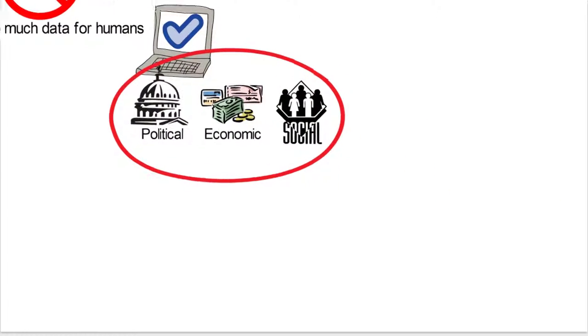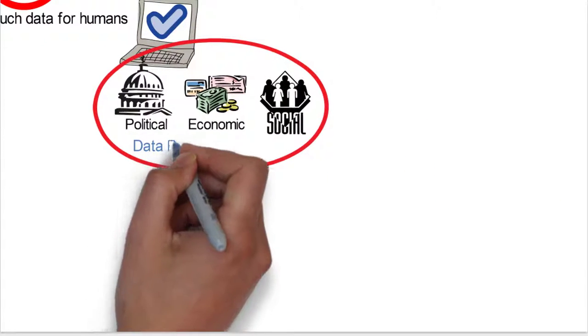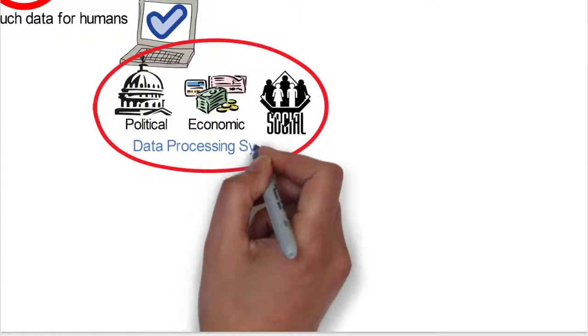So that also means that all of our institutions—our political, economic, and social institutions—are really becoming data processing systems.